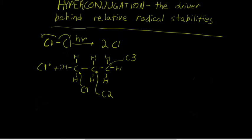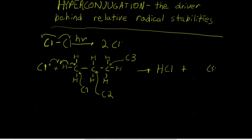If we were abstracting a hydrogen from C1, we'd have homolytic cleavage here and an unpaired electron would be left off. We get HCl plus this primary propyl radical.